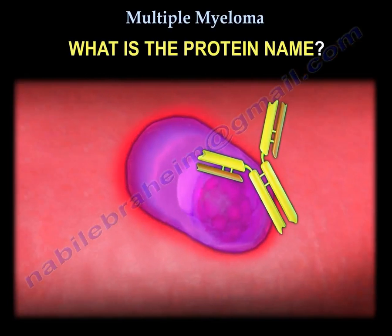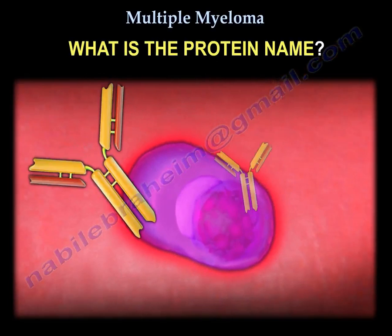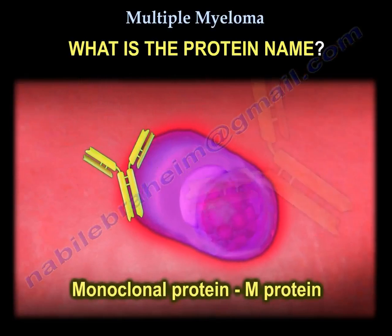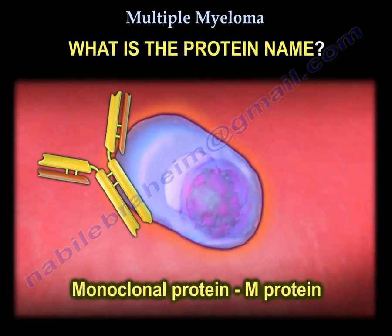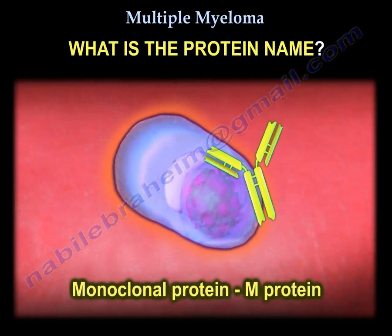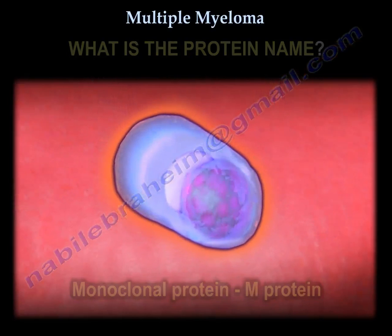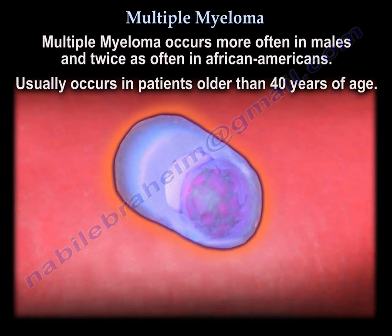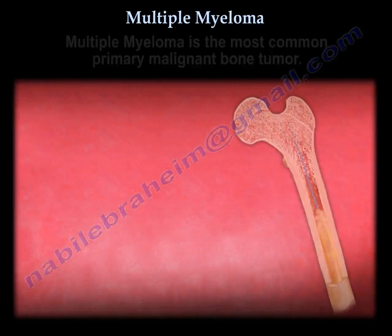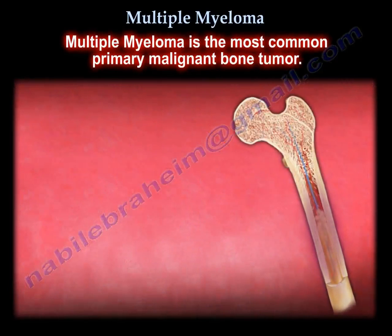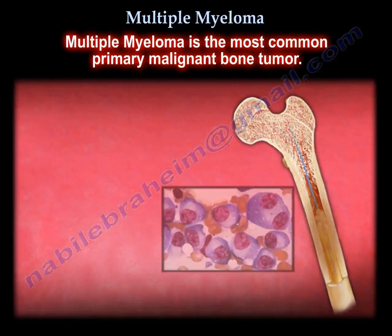The protein is called the M protein, or myeloma protein, or monoclonal protein. The condition is more common in males, twice as common in African Americans. It occurs in people older than 40 years, and it is the most common primary malignant bone tumor.